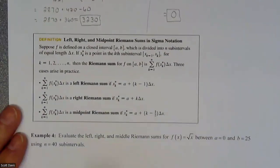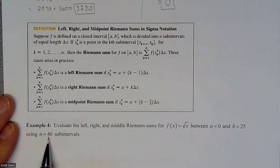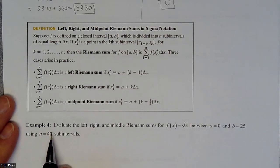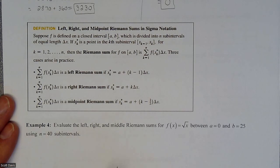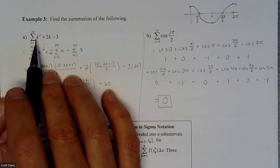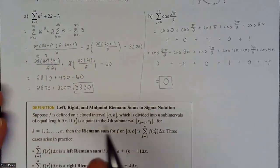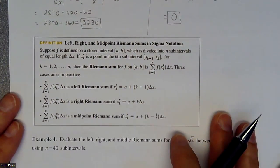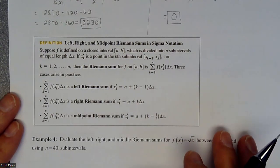However, when we do a problem that has 40 subintervals and you're going from 0 to 25, you're not even going to have nice decimal values for the widths of all these different pieces. So it gets complicated, and I don't want to add up 40 individual numbers. I'm going to use summation and formulas, or use the calculator, for quicker and more efficient ways to do this.